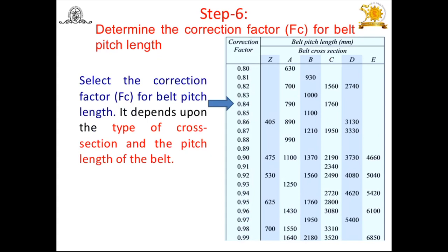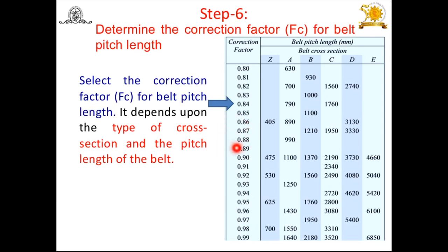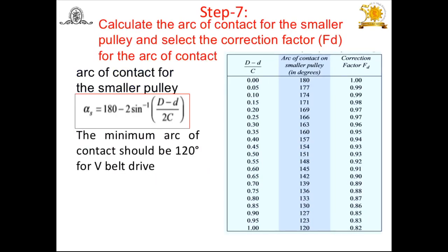Step 6: Determine the correction factor FC for pitch length. Using the cross-section from Step 2 and the selected pitch length, we refer to the correction factor table. For example, if belt section is B and pitch length is 1210 mm, the correction factor FC is 0.87.